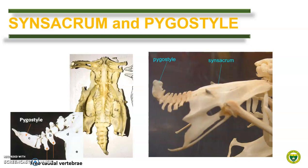The sacral vertebrae of birds are fused with the lumbar vertebrae forming the synsacrum. This synsacrum is itself fused with the ileum of the pelvic bone. We can also see the caudal vertebrae of birds. In chicken, there are around 5 to 6 caudal vertebrae. The pygostyle is formed after the fusion of the 4th, 5th, and 6th caudal vertebrae.